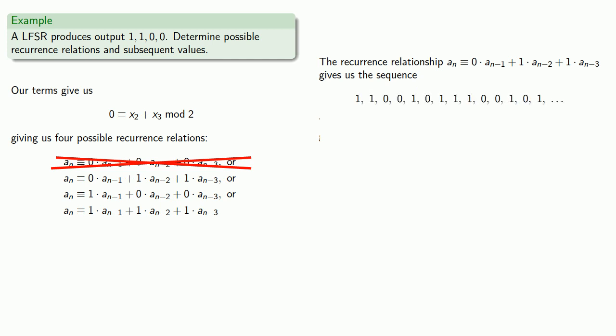The next congruence relation, an congruent to 1·an-1 + 0·an-2 + 0·an-3, is going to give us the sequence. But again, since this is just going to produce an endless string of zeros after this point, it's probably not the one being used.